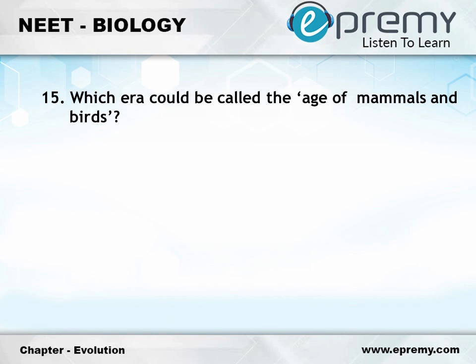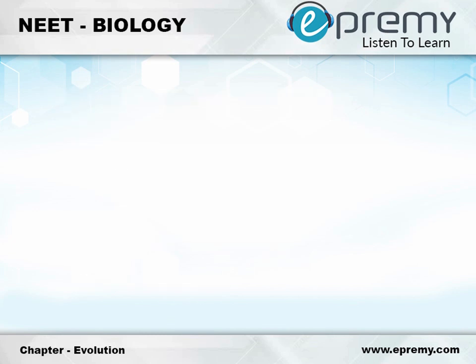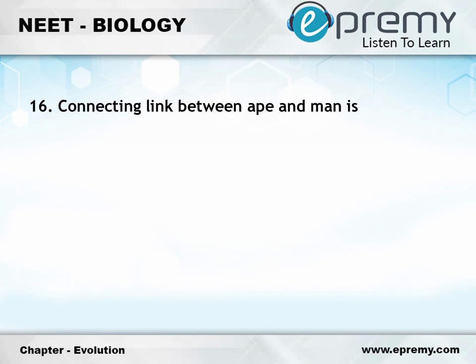Question number 15: Which era could be called the age of mammals and birds? Option A: Mesozoic. Option B: Cenozoic. Option C: Paleozoic. Option D: Cretaceous. And the answer is Option B: Cenozoic.